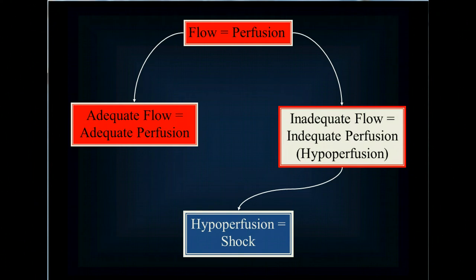With a few exceptions such as low oxygen and low glucose, almost every other type of shock is caused by inadequate blood flow due to problems with blood volume, vessel volume, or the heart's ability to pump.